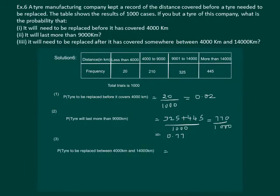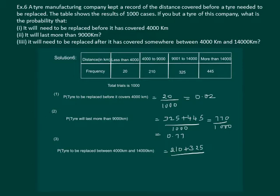The third part of the question is to find the probability of a tyre requiring replacement between 4000 km and 14000 km. This will be equal to the frequency of tyres requiring replacement between 4000 km and 14000 km, which is 210 plus 325, whole by 1000, equal to 535 by 1000, which is equal to 0.535.